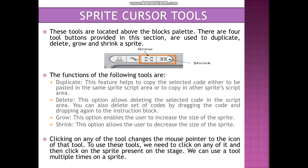This means that if we want to use the cursor tools, we need to click on any of the cursor tools. For example, if we want to increase the size of the sprite, we click the grow tool and then click on the sprite. The same way we use shrink too. This is the way we can use the sprite cursor tools.